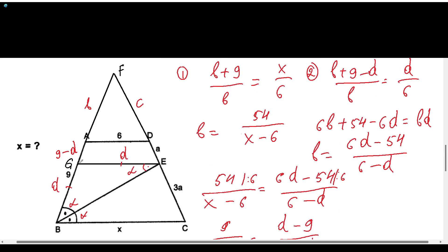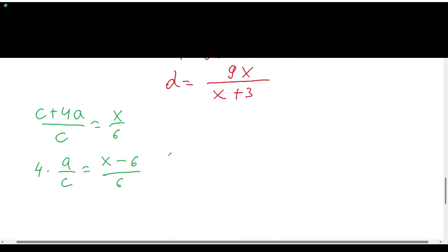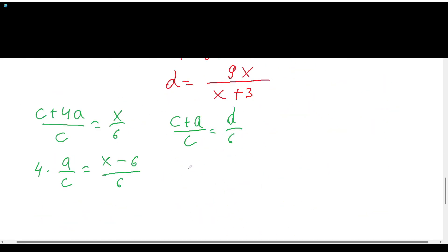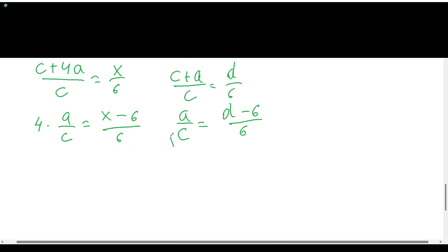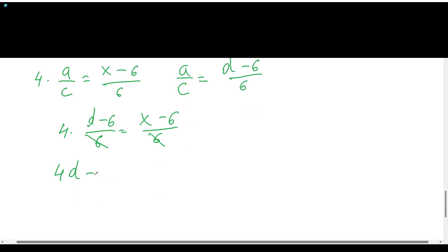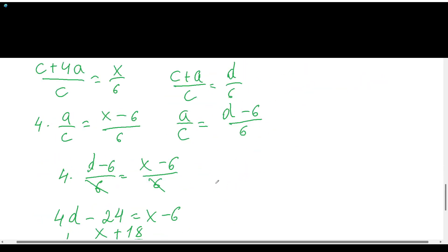Using triangles def and adf, we get (c + a) over c equals d over 6, so a over c equals (d − 6) over 6. Now we plug this expression for a over c into our earlier equation: 4 times (d − 6) over 6 equals (x − 6) over 6. Canceling the 6s, we get 4d − 24 equals x − 6, so d equals (x + 18) over 4.